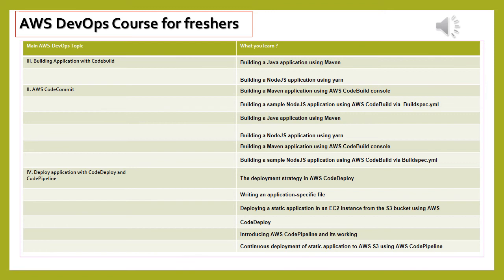Building Application with Code Build: from the previous sessions, your code is in AWS Code Repository and needs to be packaged into a build, done through the Code Build process. Different technical build tools are used under Code Build, including: building a Java application using Maven, building a Node.js application using YARN, building a Maven application using AWS Code Build Console, and building a sample Node.js application using AWS Code Build via BuildSpec.yaml.